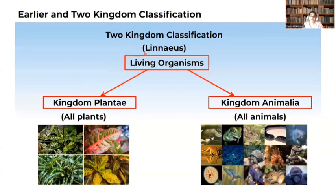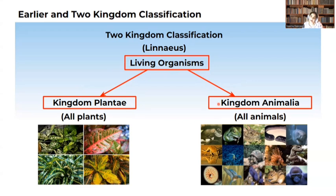This two-kingdom classification was also proposed by Linnaeus. According to him, all living organisms are grouped into kingdom Plantae as well as kingdom Animalia. Kingdom Plantae included all the plants, whereas kingdom Animalia included all the animals.